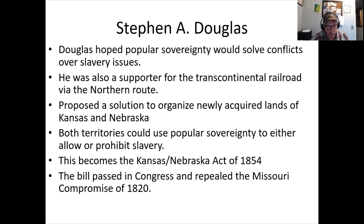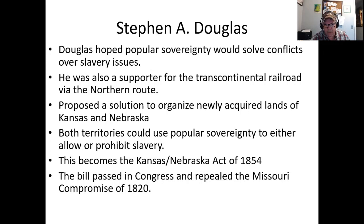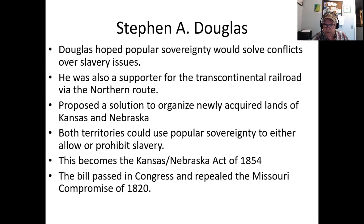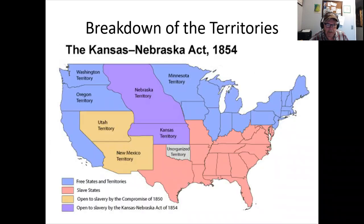By passing the Kansas-Nebraska Act, which includes popular sovereignty, the 36°30' line becomes irrelevant — it effectively repeals the Missouri Compromise. There is no longer a line dividing free and slave states, no balance of power compromise. Now, if you're pro-slavery, you send supporters into a new state as it's forming to tip the vote toward pro-slavery. Anti-slavery forces do the same. The old geographic certainty is gone.